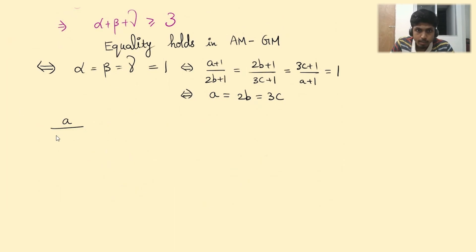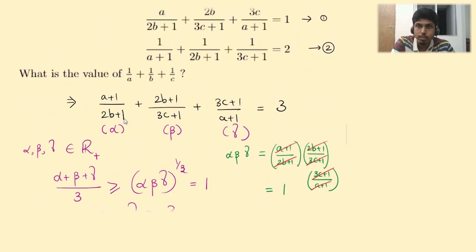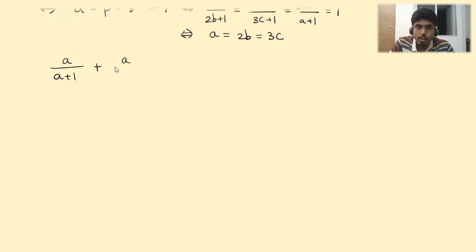A/(A+1) plus 2B/(3C+1) which is again A/(A+1), so all the terms individually are A/(A+1). That equals 1, so this implies 3A/(A+1) = 1, which implies 2A = 1 or A = 1/2.